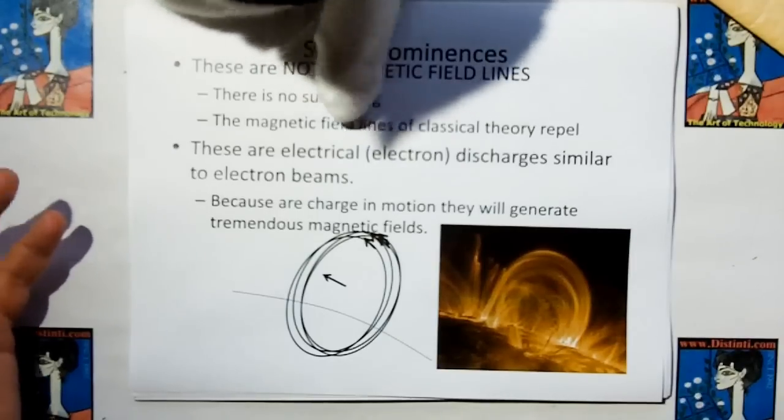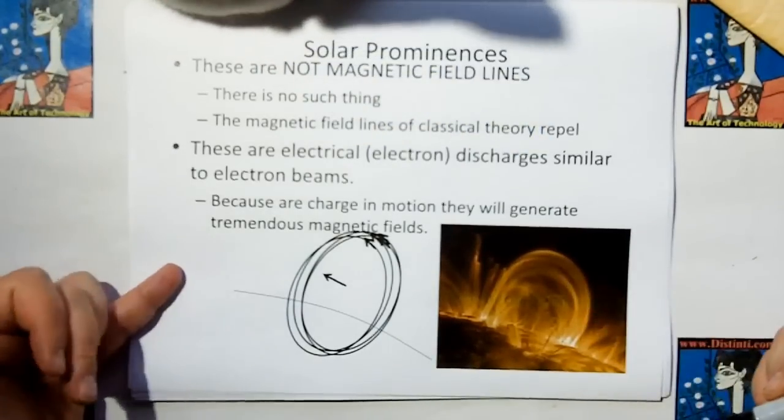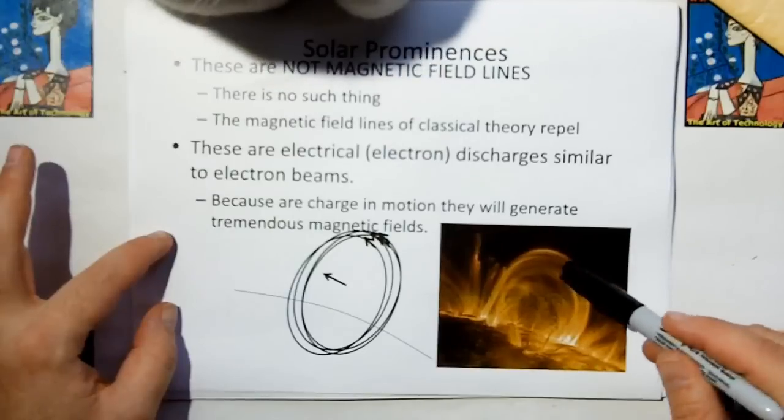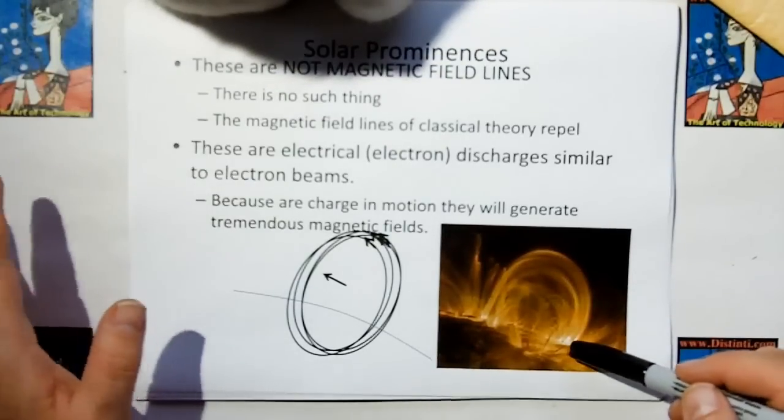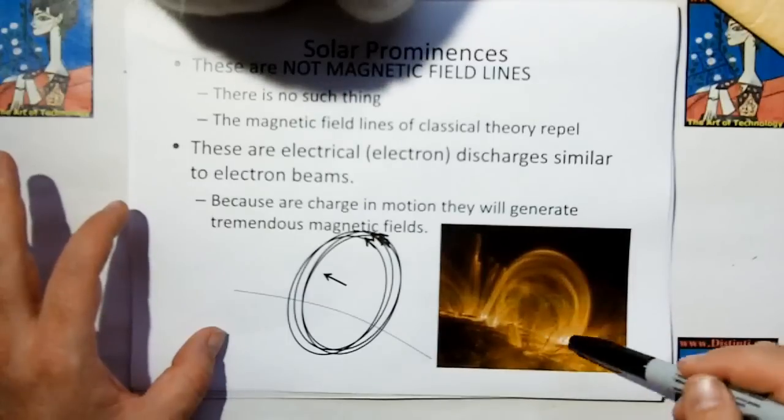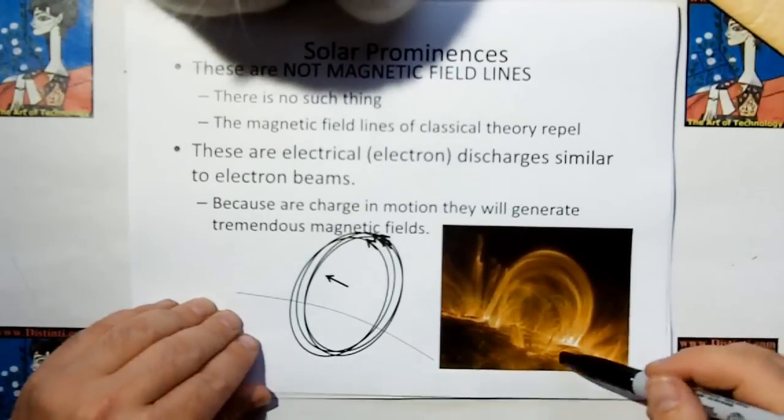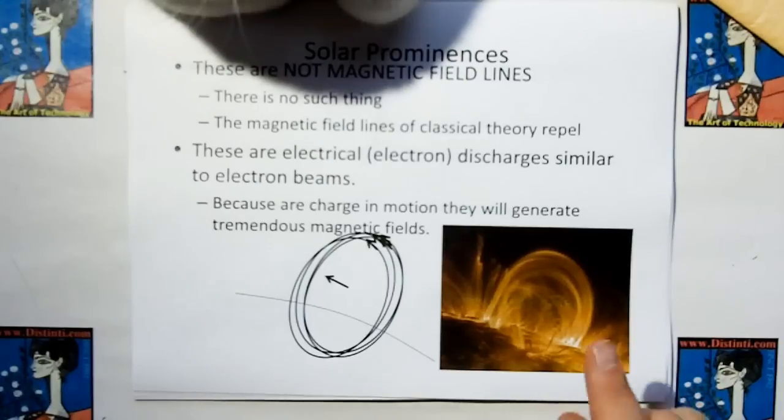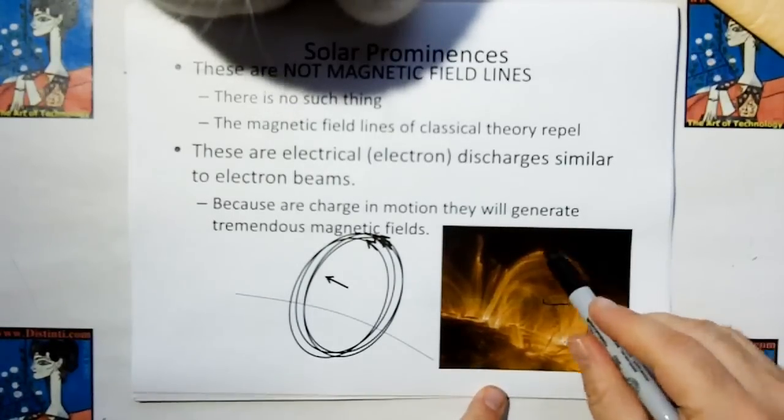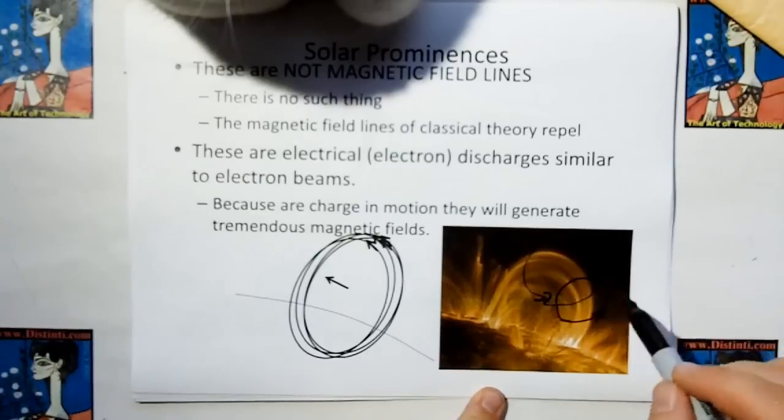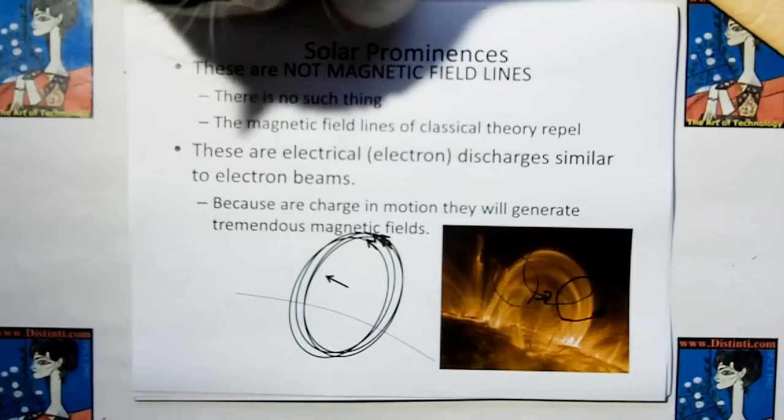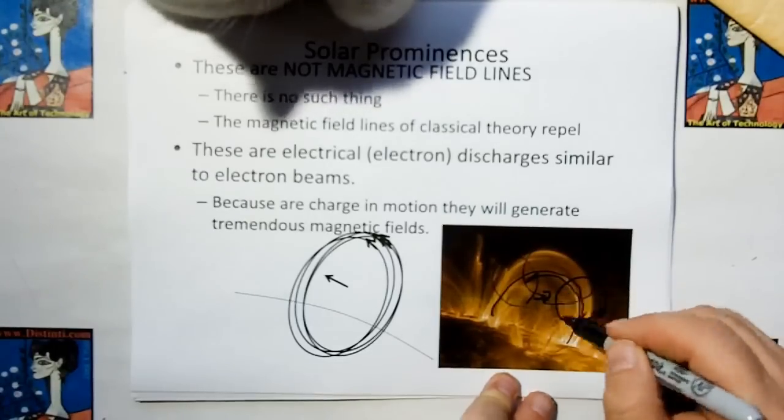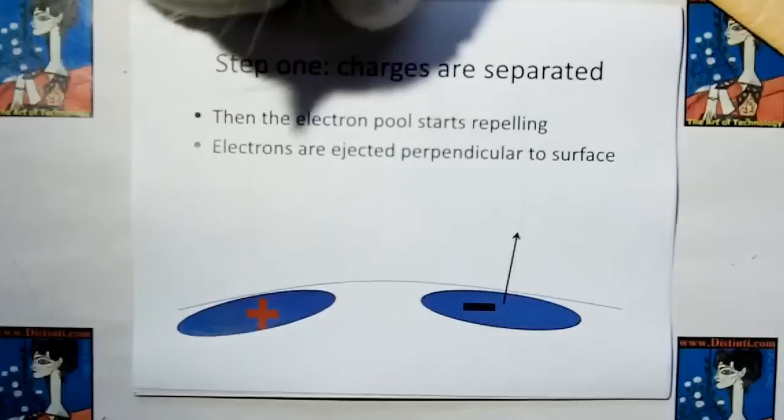In fact, if they were the magnetic field lines of classical theory, these would be repelling. So what these are are electron discharges similar to electron beams or a plasma lamp. Not quite a plasma lamp. This is very fast, more like an electron beam that you'd see in an old TV set. And because the charges are in motion, they're going to generate an incredible magnetic field. If I had to show you where the flux lines of classical theory would put those flux lines, those flux lines would be going around this way. But it's more likely that you have charge moving in both directions here. Positive moving one way, negative moving the other.